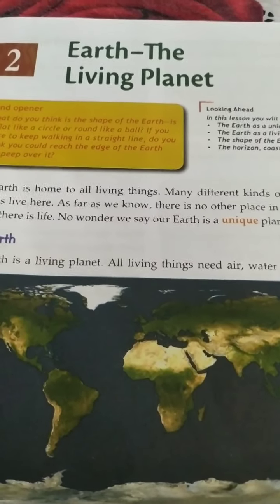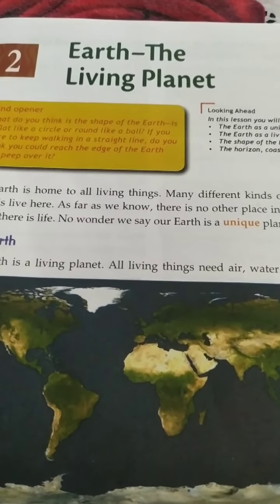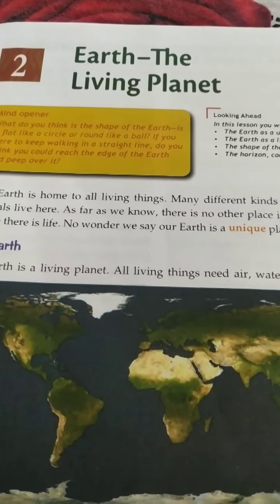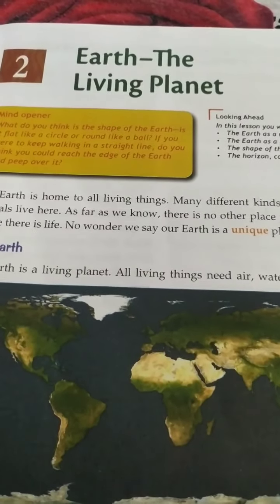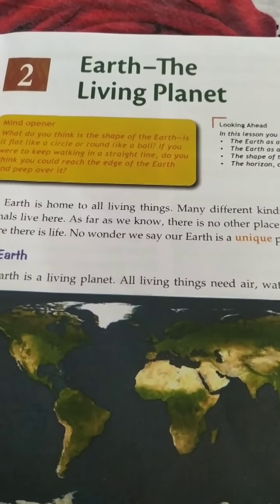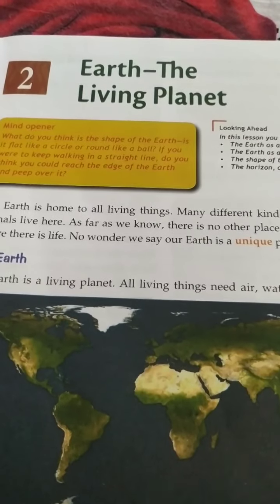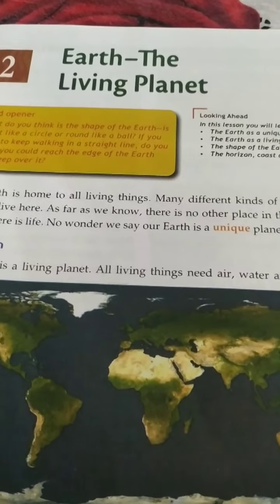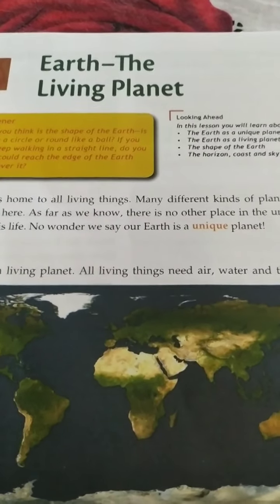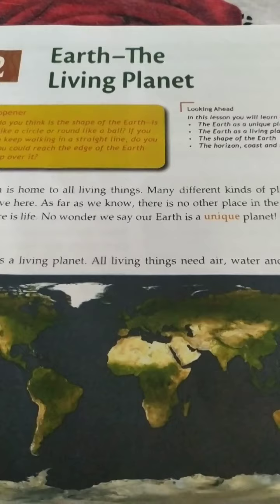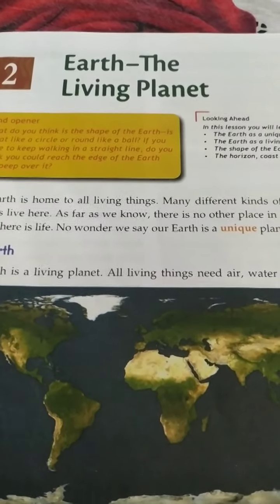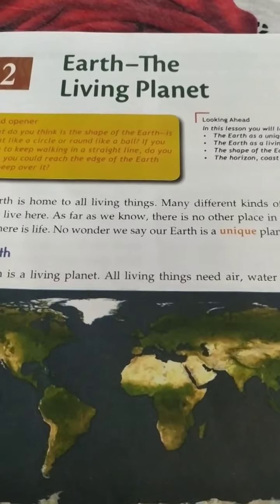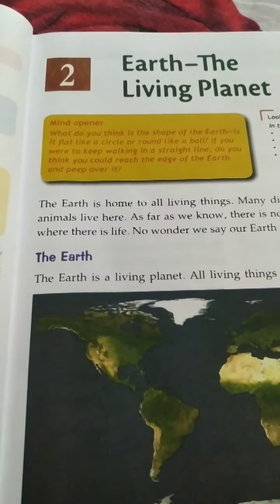As you all know, earth is the only planet where living beings can live. So the earth is home to all living things. Many kinds of plants, animals, creatures, and insects live here. There is no other place in the universe where there is life. That's why we say our earth is a unique planet.